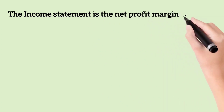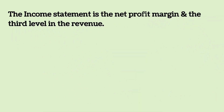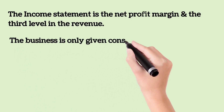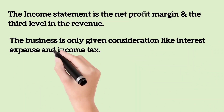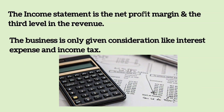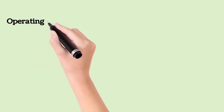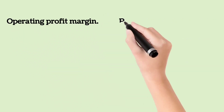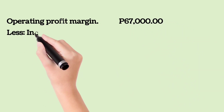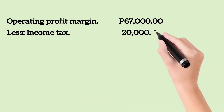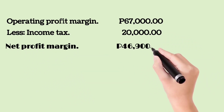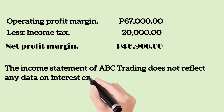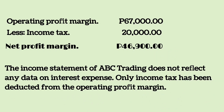The Net Profit Margin is the third level in the income statement revenue. The business gives consideration to items like Interest Expense and Income Tax. By applying the formula: Operating Profit Margin $67,000 less Income Tax $20,000 equals Net Profit Margin $46,900. The income statement of ABC Trading does not reflect any interest expense; only Income Tax has been deducted from the Operating Profit Margin.